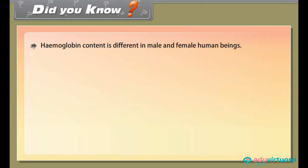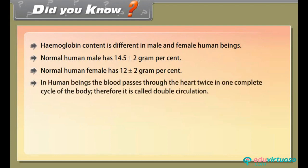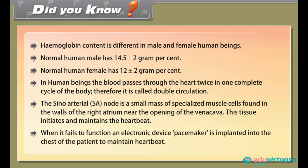In human beings, blood passes through the heart twice in one complete cycle of the body; therefore, it is called double circulation. The sino-atrial (SA) node is a small mass of specialized muscle cells found in the walls of the right atrium near the opening of the vena cava. This tissue initiates and maintains the heartbeat. When it fails to function, an electronic device called a pacemaker is implanted into the chest of the patient to maintain heartbeat.